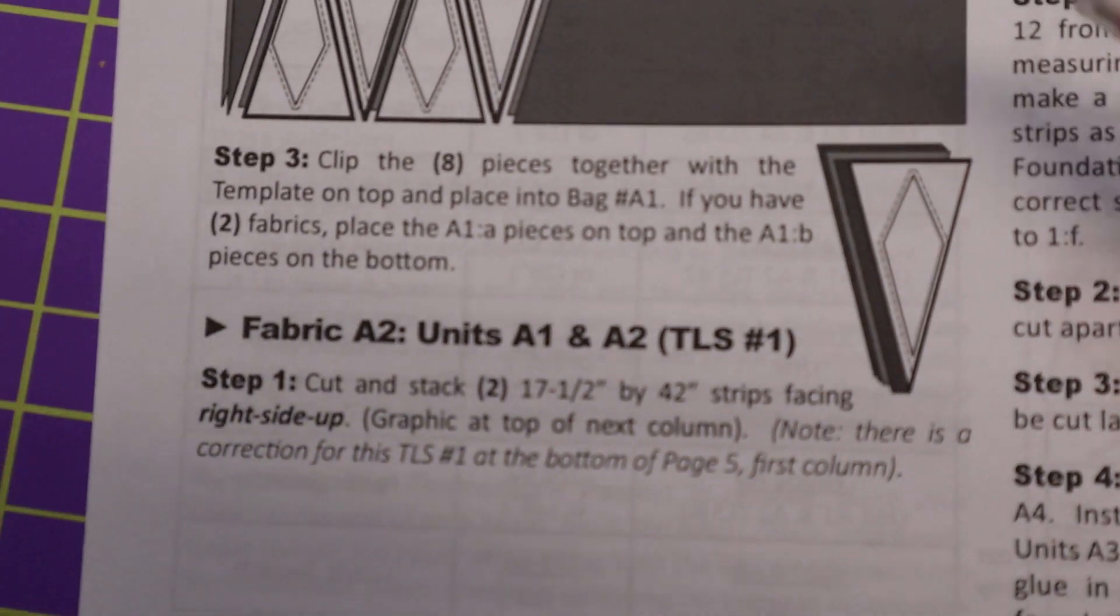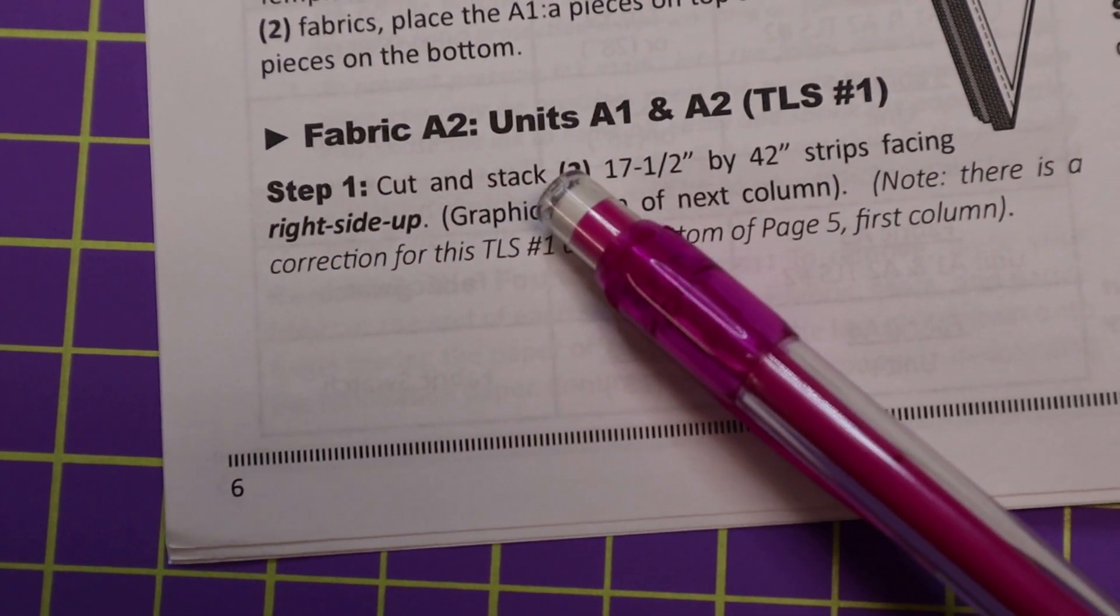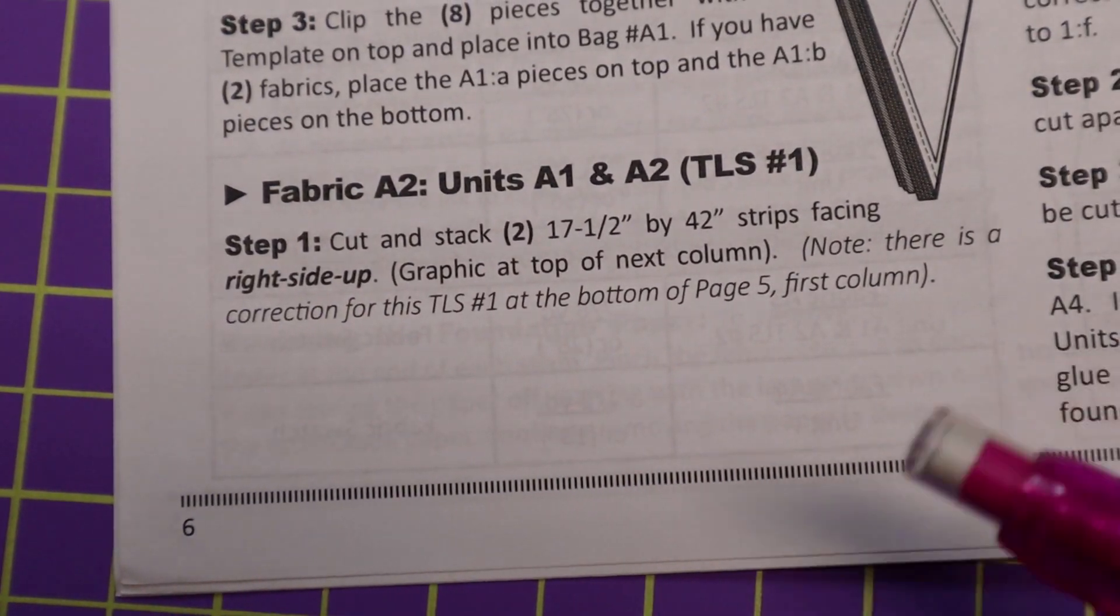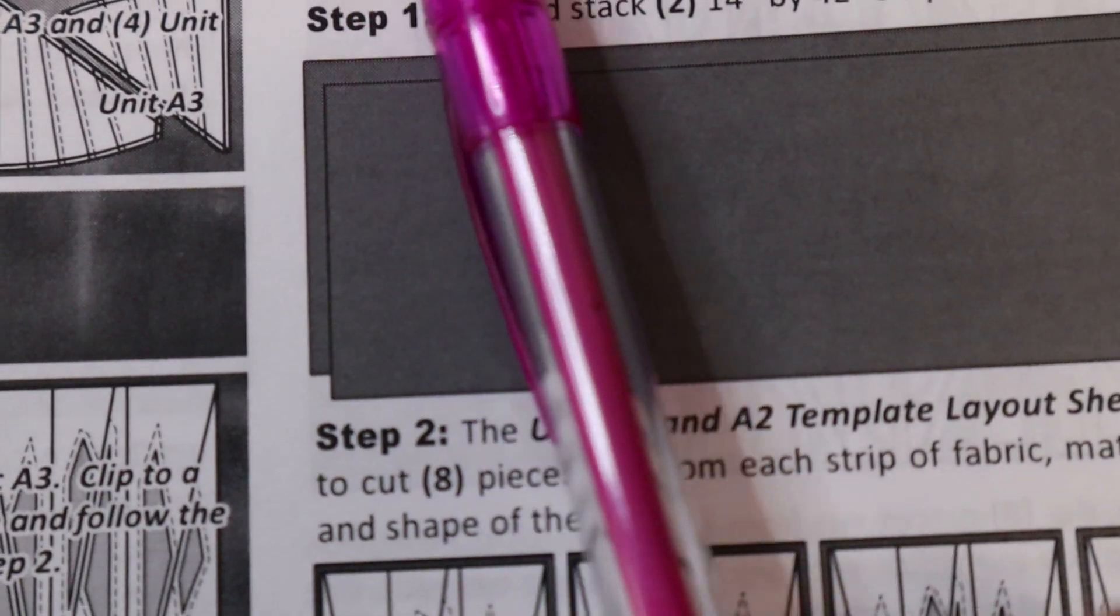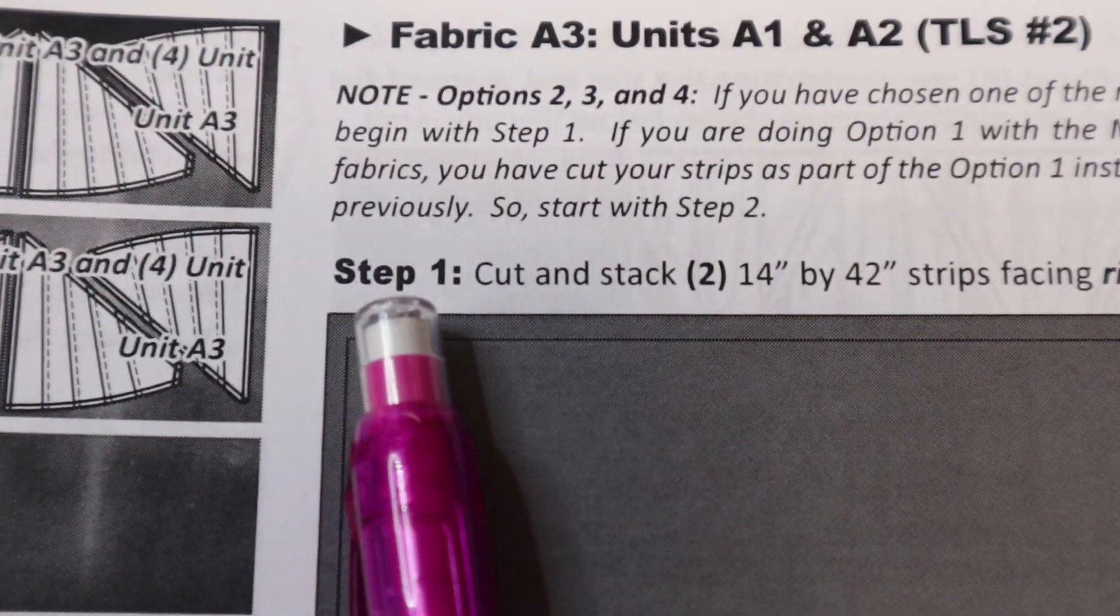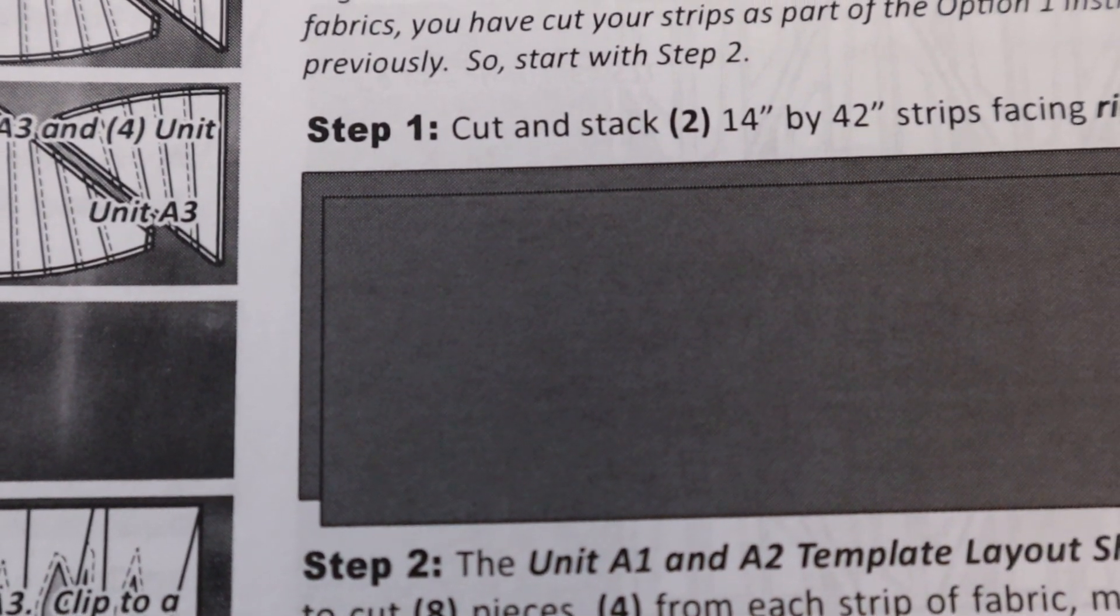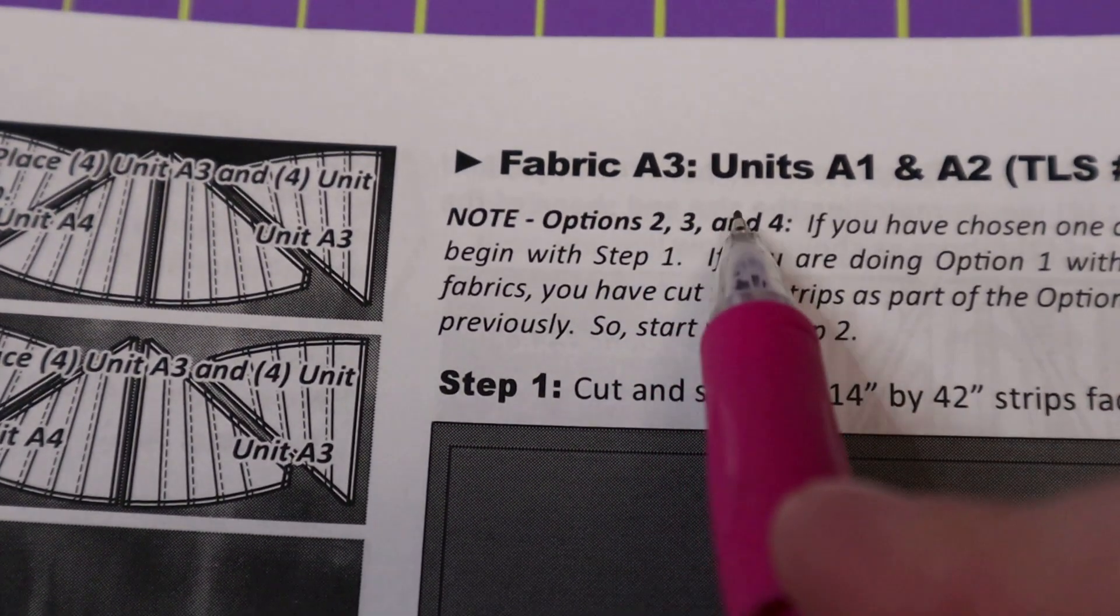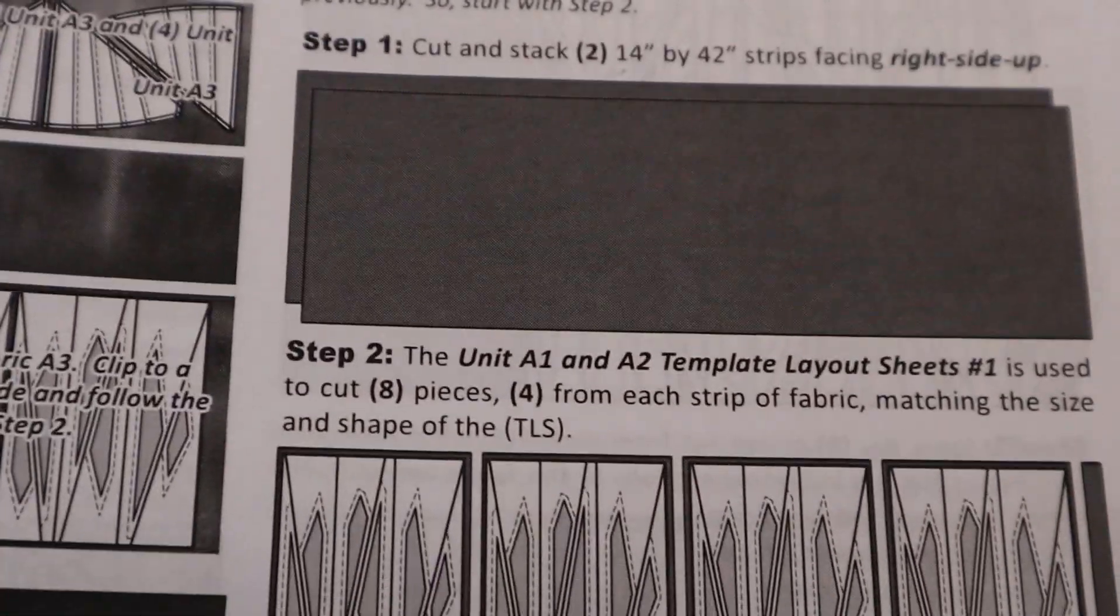Then I will go, in another video, I'll go a little more into detail about actually cutting out your fabrics. But if you follow along every fabric number and look at step one, it's going to tell you what size and how many strips you need to cut your fabric. So let's go to the next fabric, to A2. So right here, fabric A2, step one, cut and stack two 17 and a half inch by 42 inch strips facing right side up. So if you follow along every fabric number, so if we go to fabric A3, options two, three, and four, step one, cut and stack two 14 inch by 42 inch strips facing right side up. So if you go through your pattern and you highlight those, which I like to do with my patterns, I'll just take a highlighter and go through every fabric number, highlight the fabric number and highlight step one, what size strip I need to cut. That will help you with organizing all of your fabrics.